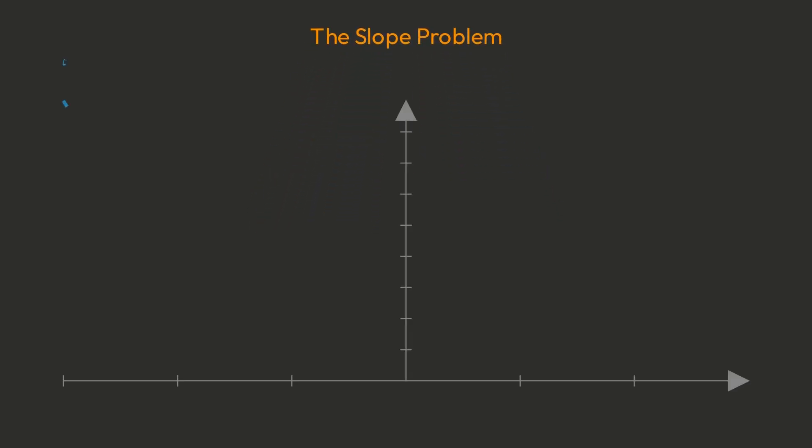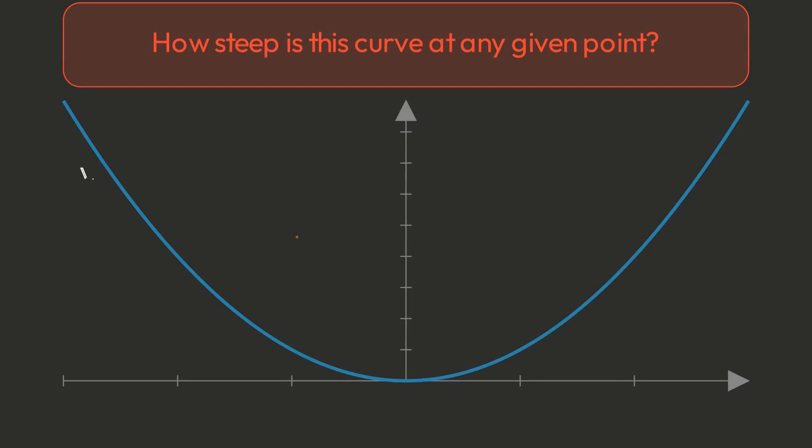This curve, a simple parabola, changes direction at every point. The question is deceptively simple: what's the steepness at any single point?